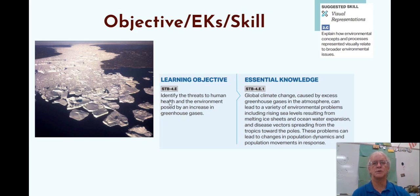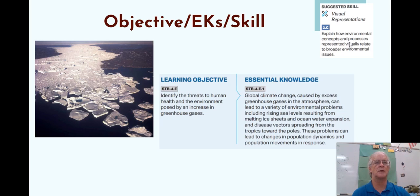Our objective is to identify the threats to human health and environment posed by increasing greenhouse gases. The essential knowledge is to understand how the causes of greenhouse gas in the atmosphere can lead to a variety of environmental problems, including sea level rise, melting ice sheets, ocean expansion, disease, and vector spread. The skill you need to know is how to explain environmental concepts and processes represented visually and how they relate to broader environmental issues.